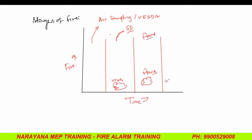At last, the fourth stage, it is very intense. As the intensity increases, you see the fire also increase — so intense fire here. This can be addressed by your sprinkler, hydrant, and all those things.